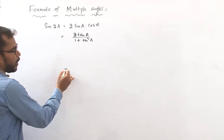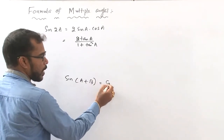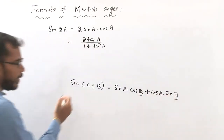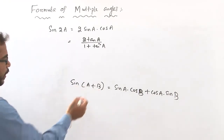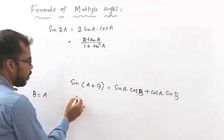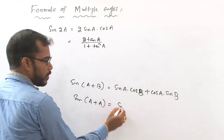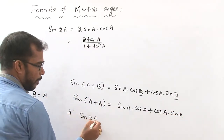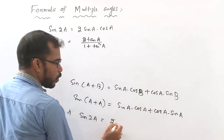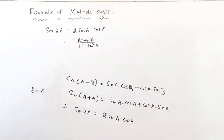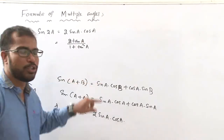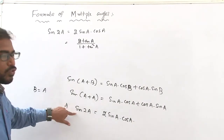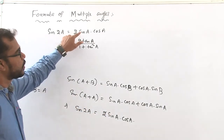To derive sin 2a equals 2 sin a into cos a: as we know from the previous class, sin(a + b) equals sin a cos b plus cos a sin b. If we put b equal to a, then sin(a + a) equals sin a cos a plus cos a sin a, which gives sin 2a equals sin a cos a plus sin a cos a, and therefore sin 2a equals 2 sin a into cos a.